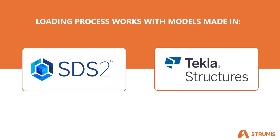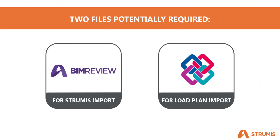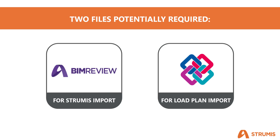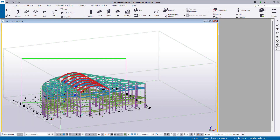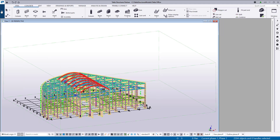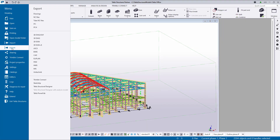Before we begin it's worth noting that this operation process will work with either Tekla or SDS2. We do however need a BSWX for the import of the steel into Strumis, but we will be fine with an IFC for the import into load planning, so we're going to need two files. It's also worth noting that the IFC we are going to run into SDS2's load planning will need the assembly hierarchy in it.